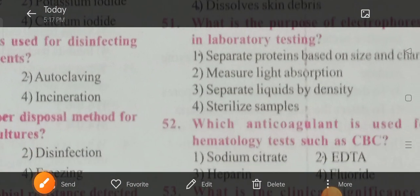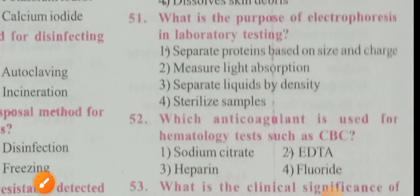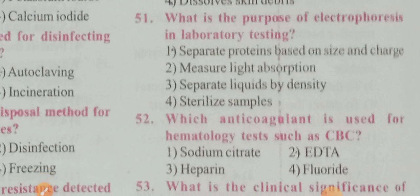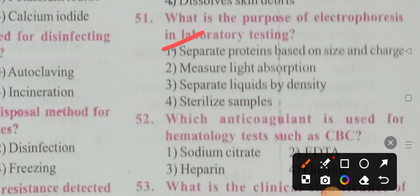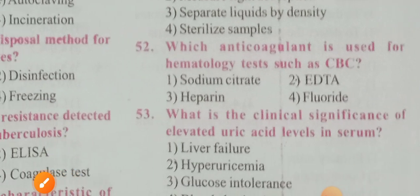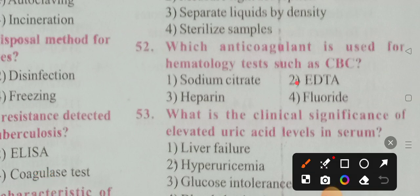What is the purpose of electrophoresis in laboratory systems? Options: measure absorption, separate liquids by density, stabilize samples, separate proteins based on size and charge. Option 1 is the correct answer. Which anticoagulant is used for hematology tests such as CBC? Options: sodium citrate, EDTA, heparin, chloride. Option 2 is the correct answer — EDTA.